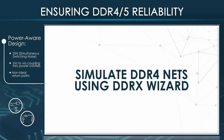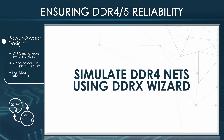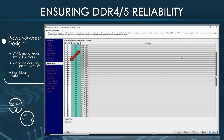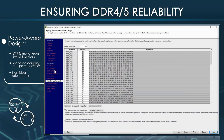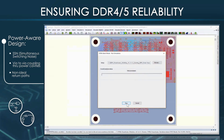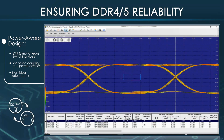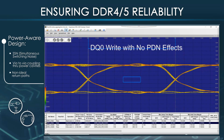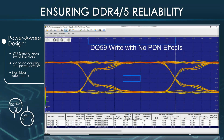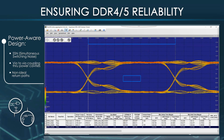Now let's simulate a couple of DDR4 nets using the DDRX wizard in HyperLynx SIPI. In the DDRX wizard, only DQ0 and DQ59 nets are enabled, and coupling and power-aware options are turned off. Running the simulation shows the eye for DQ0 read, DQ0 write, DQ59 read, and DQ59 write. As you can see, the eyes look pretty good without any PDN effects.